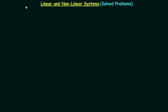In the last lecture we saw the definition of linear and nonlinear systems and I explained how to find out if the given system is linear or nonlinear. Now in this presentation we are going to solve problems based on linear and nonlinear systems. We already know if a system follows the principle of superposition it is a linear system, and if the system violates it, it is nonlinear. Based on this we will prove the linearity of the given system.